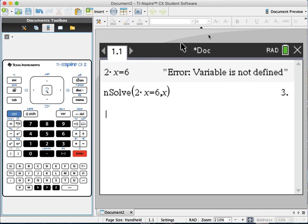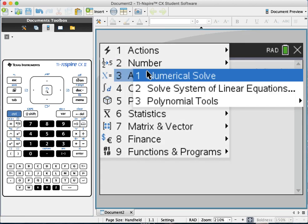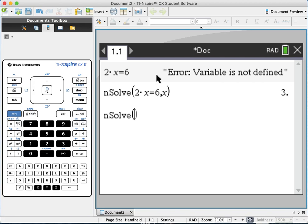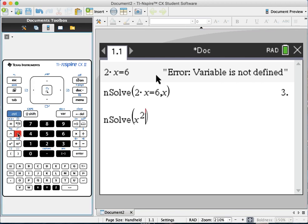What happens when equations have more than one solution? Let me take another example. Menu, algebra, numerical solve, x squared equals 4, for example, comma, where the variable is x.